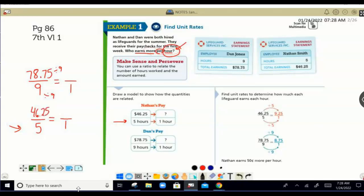You can also look at this and say, I see this right here. This is a math problem. This is 46.25 divided by five, which is exactly what we need to do to find our unit rate, just like we did up here.